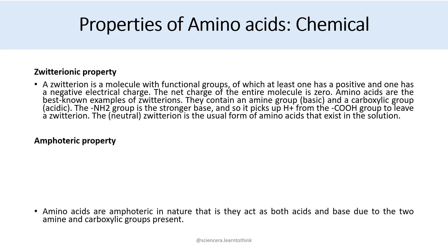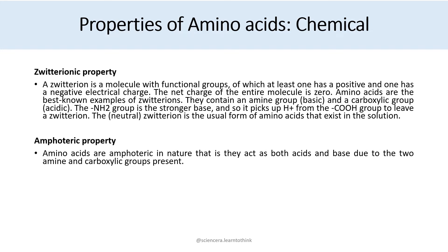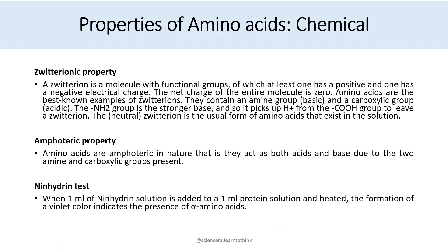Amphoteric property of amino acids: amino acids are amphoteric in nature, meaning they act as both acid and base due to the two amine and carboxylic groups present. Ninhydrin test: when one ml of ninhydrin solution is added to one ml of protein solution and heated, the formation of a violet color indicates the presence of an alpha amino acid.